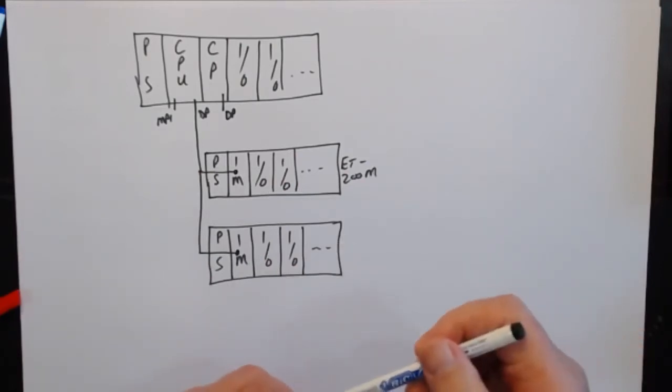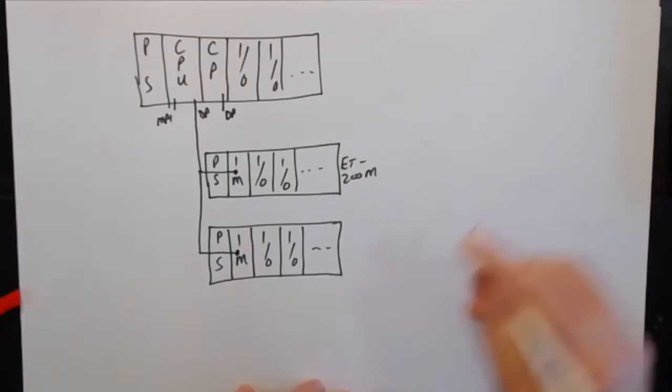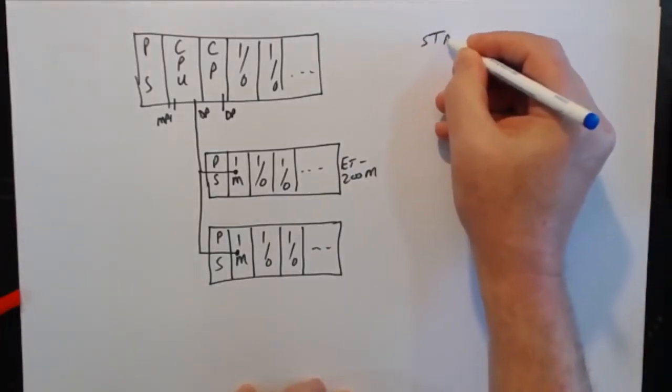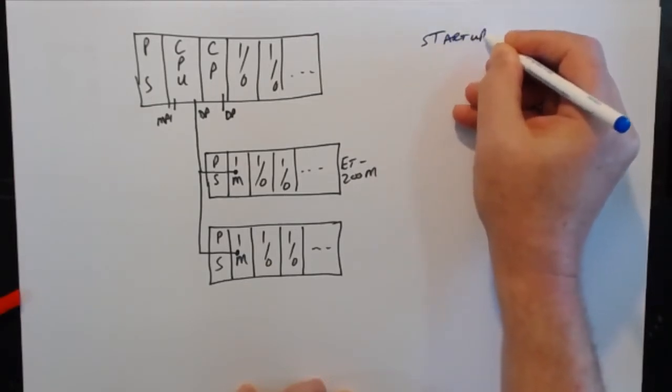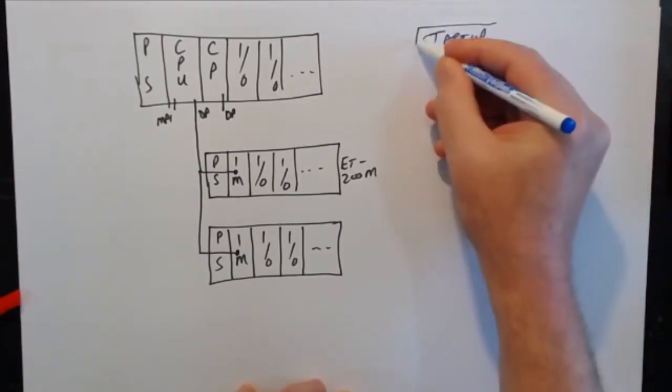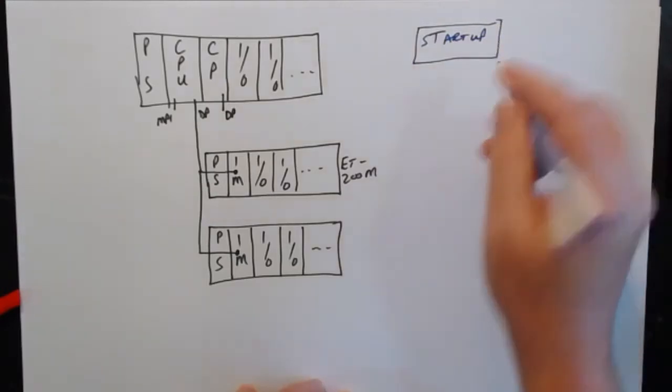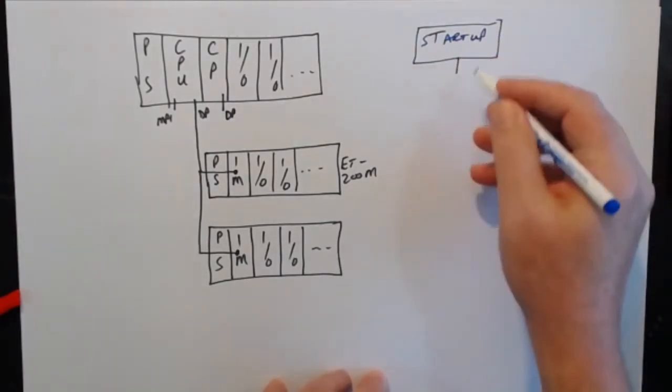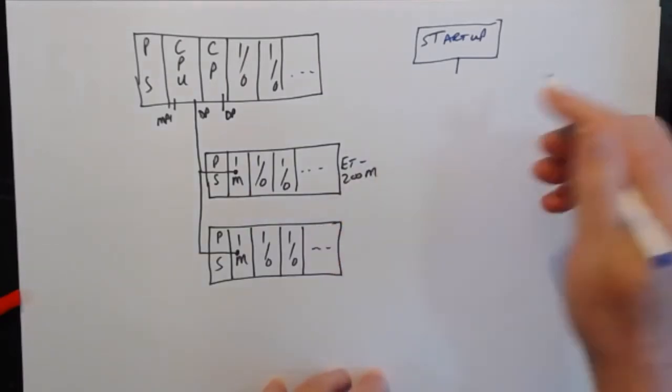Let's go on to the software itself. Let's go and take a look at how the PLC operates. Your CPU, when it starts up, it runs through a startup protocol or startup sequence, where it does diagnostic checks and sets up all the IO.